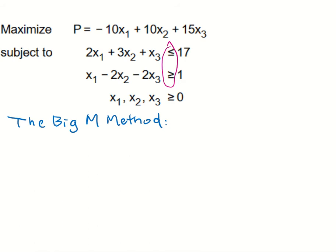First, let's write the inequalities into equations. We'll add a slack variable s1 to the first inequality: 2x1 plus 3x2 plus x3 plus s1 equals 17. The reason we can add a slack variable is because we have less than or equal to.